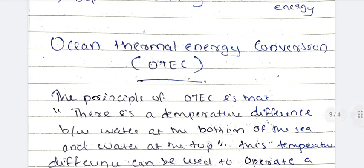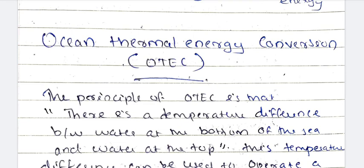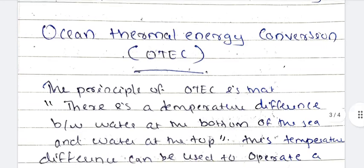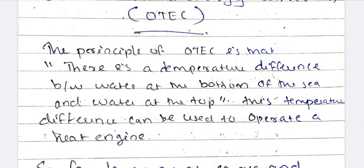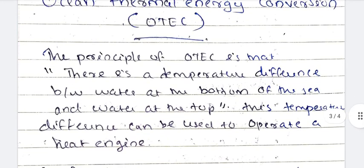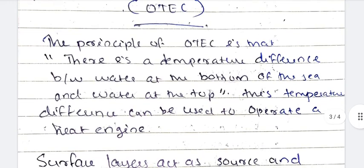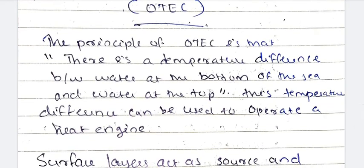The next important chapter is Ocean Thermal Energy Conversion, abbreviated as OTEC. The principle of OTEC — Ocean Thermal Energy Conversion — is based on the temperature difference between water at the bottom of the sea and water at the top of the sea.